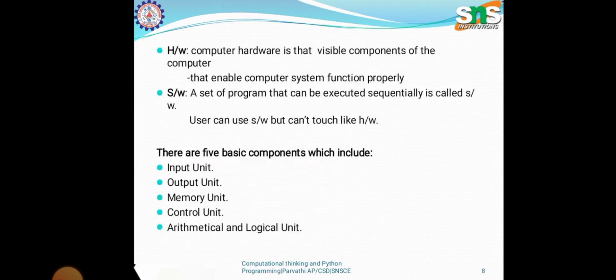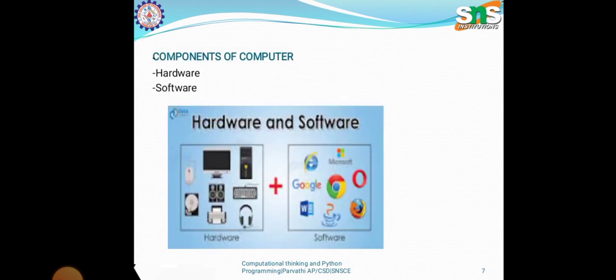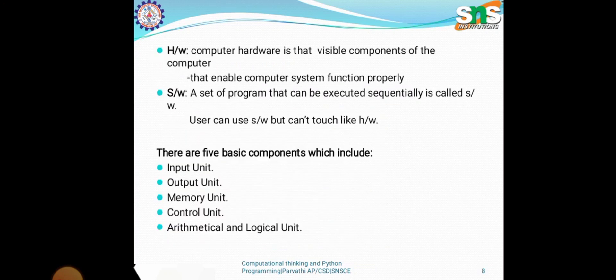What is hardware? Computer hardware is nothing but the visible components of the computer. It enables the computer system to function properly. Examples include monitor, CPU, speaker, and UPS. These are called hardware because we can touch them.